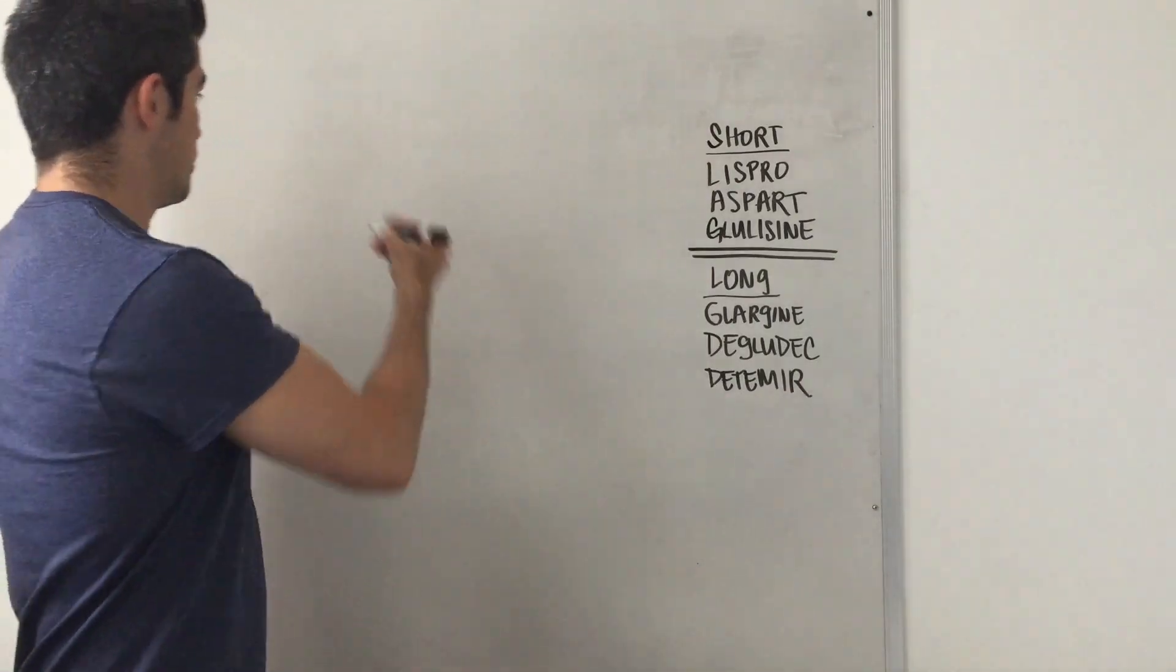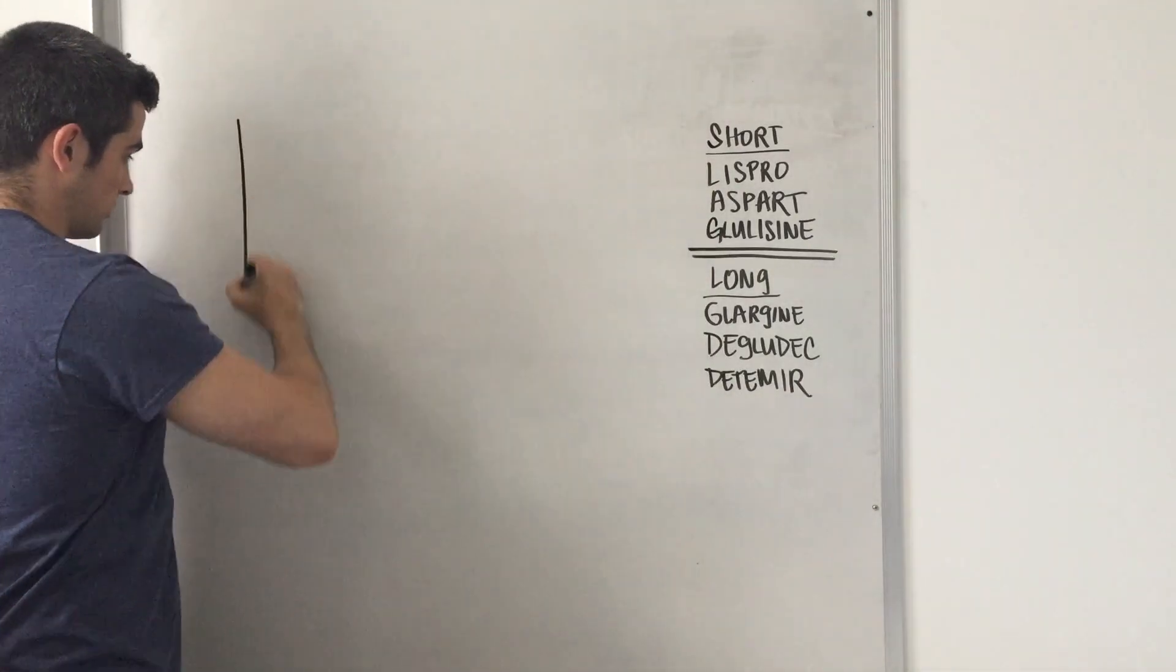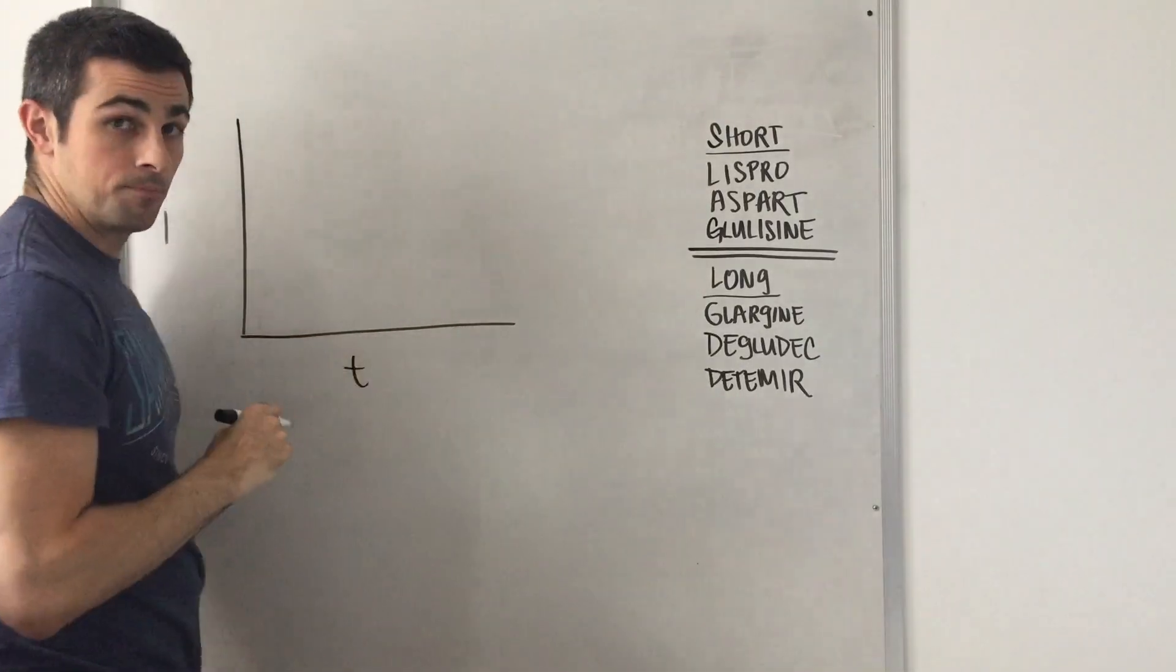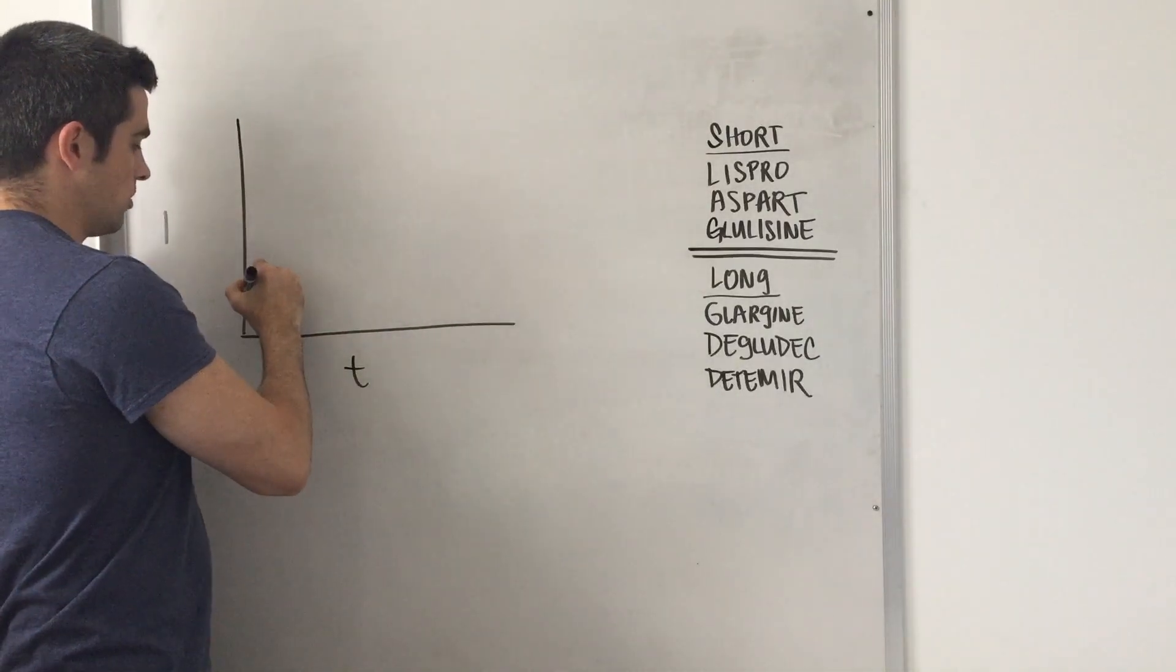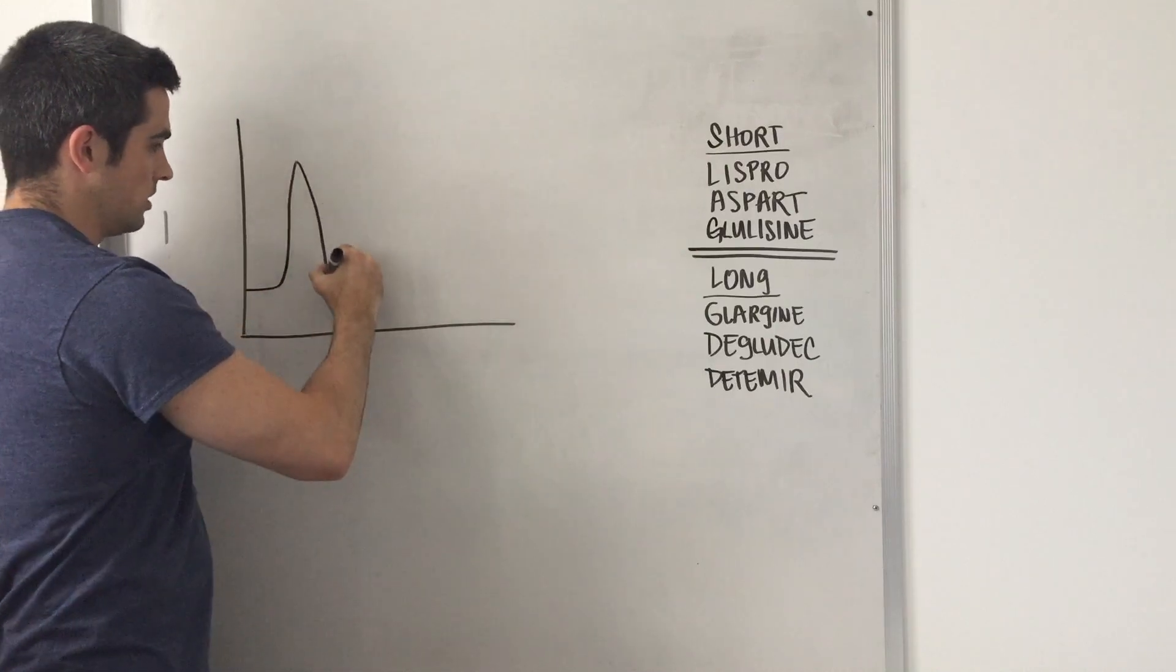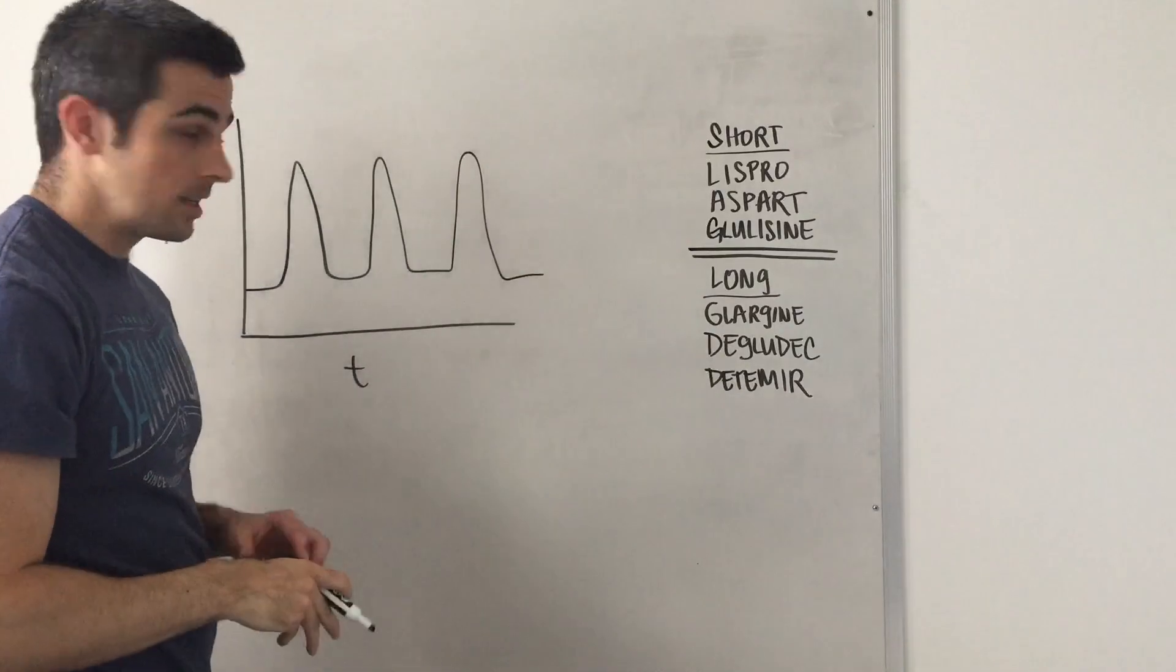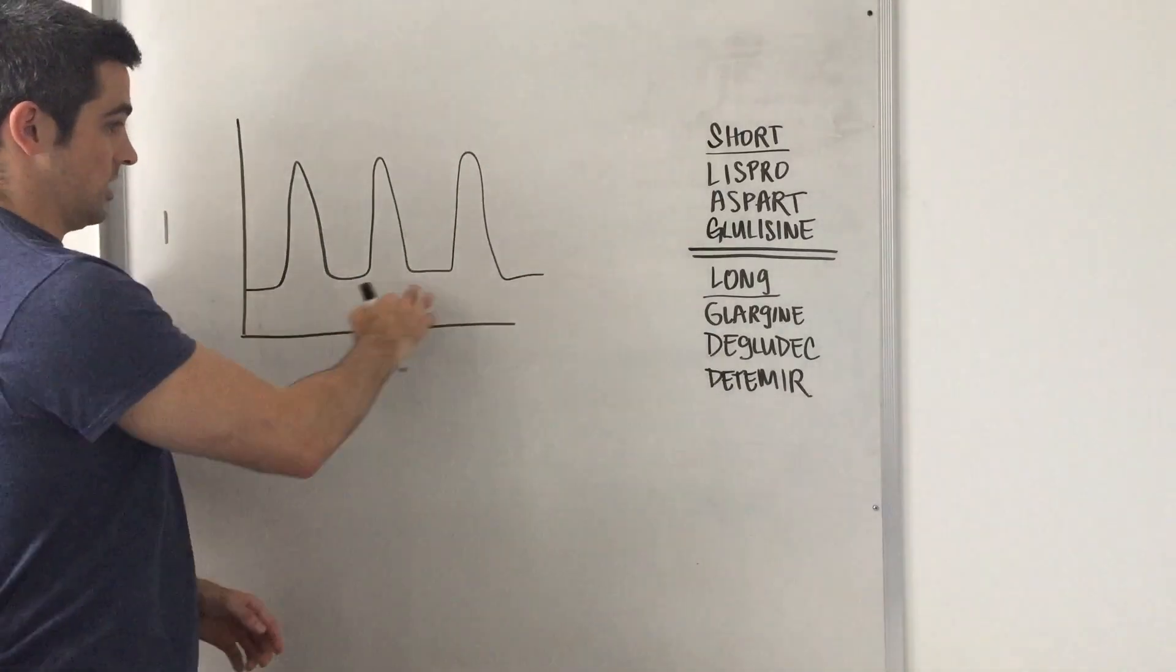So you have your general chart which has your insulin and time. Insulin is always released at a basal level and then increases in response to high levels of glucose, usually around mealtimes: breakfast, lunch, and dinner.